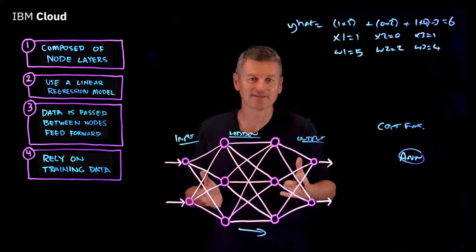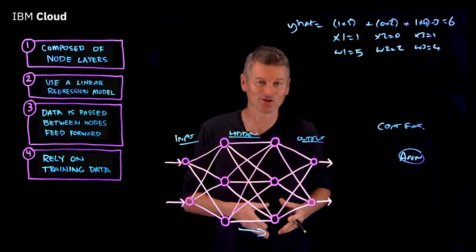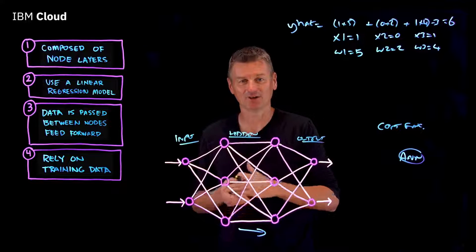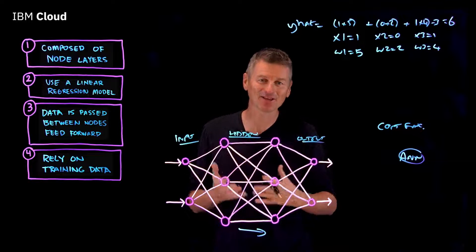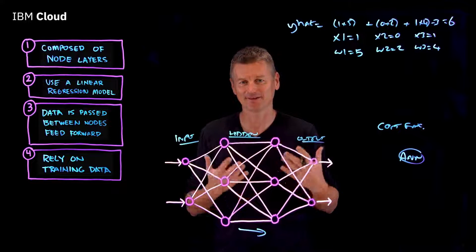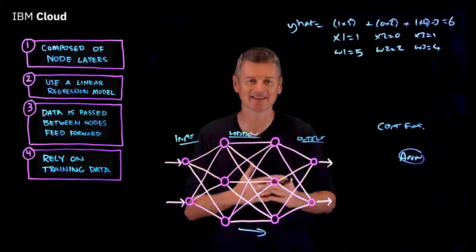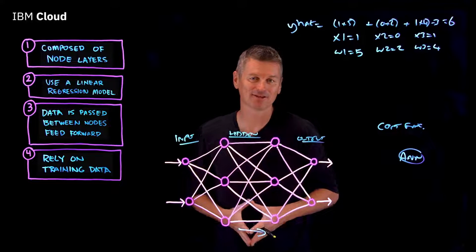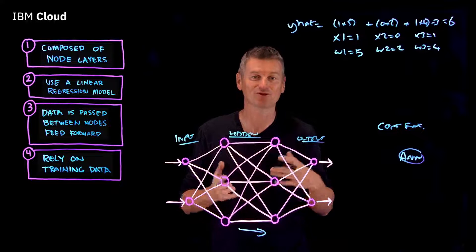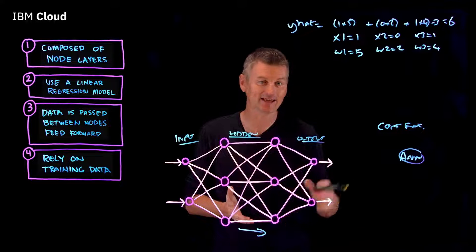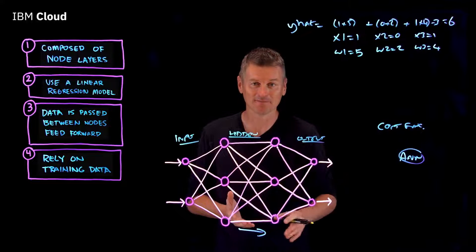we'll want to evaluate its accuracy using something called a cost function. Ultimately, the goal is to minimize our cost function to ensure the correctness of fit for any given observation. That happens as the model adjusts its weights and biases to fit the training data set through what's known as gradient descent, allowing the model to determine the direction to take to reduce errors or, more specifically, minimize the cost function.